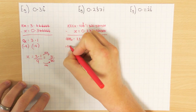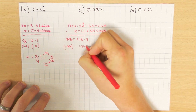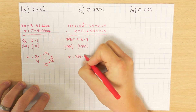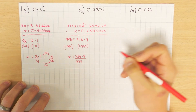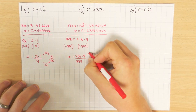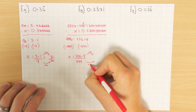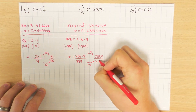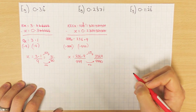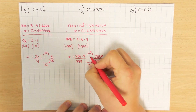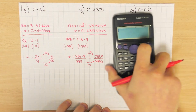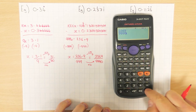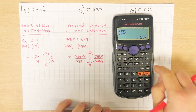Divide both sides by 999. So x equals 236.9 all over 999. Need to get rid of that decimal point, just like before — times top and bottom by 10. So that gives 2369 over 9990. If you can simplify it, you can do that, but in this case we can't. Let's use the calculator to double check: 2369 over 9990 gives 0.2 and then 371 recurring — excellent, it's correct.